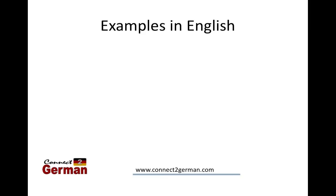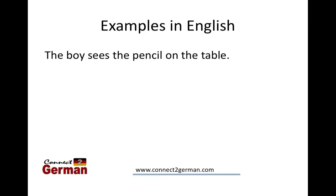Let's start with an example in English: 'The boy sees the pencil on the table.' We can see that the subject is 'boy,' the pencil is our direct object, and 'on the table' - our prepositional phrase - is our indirect object.